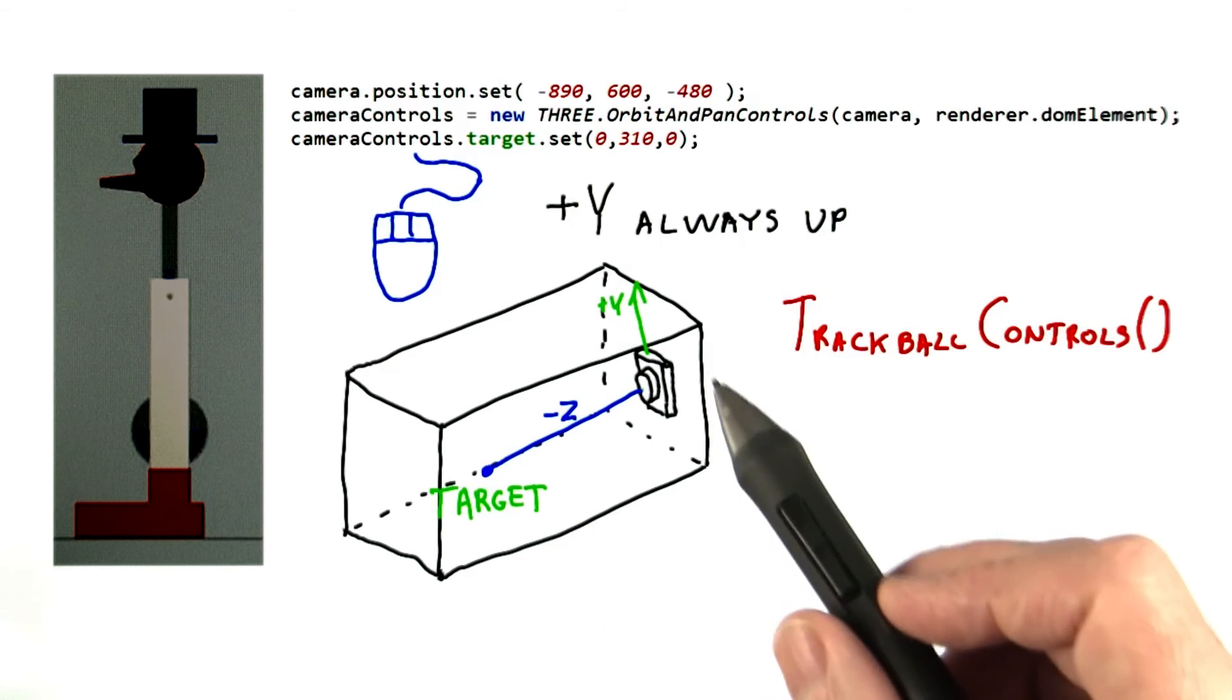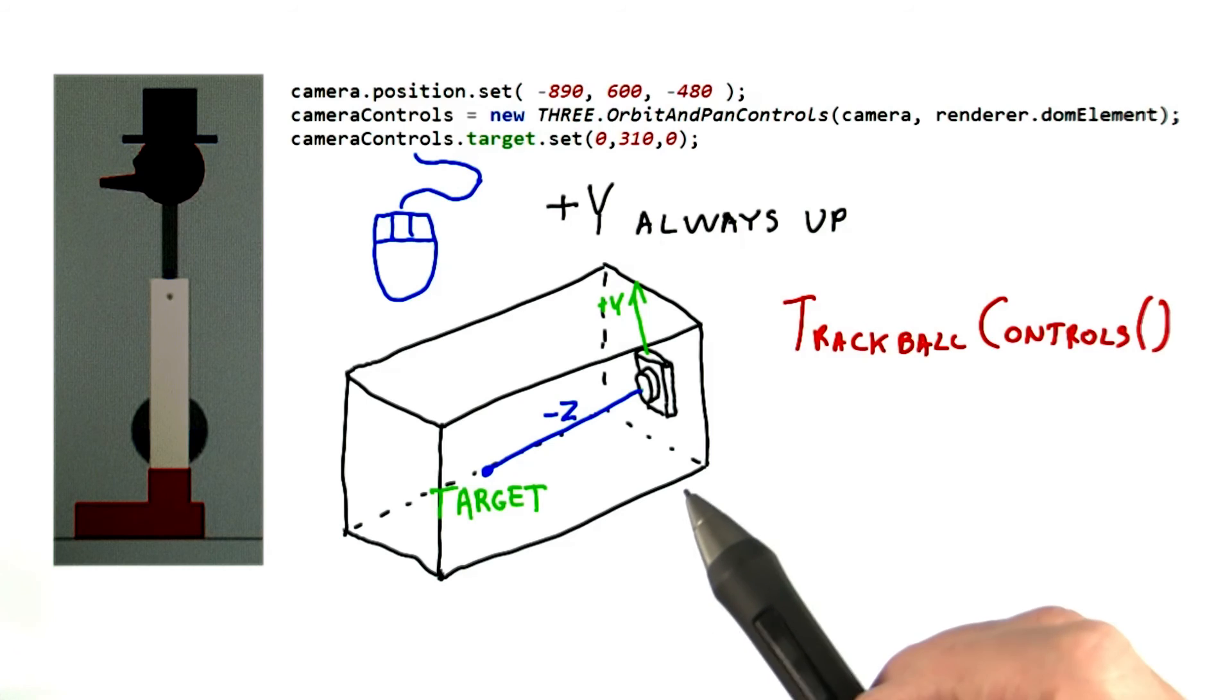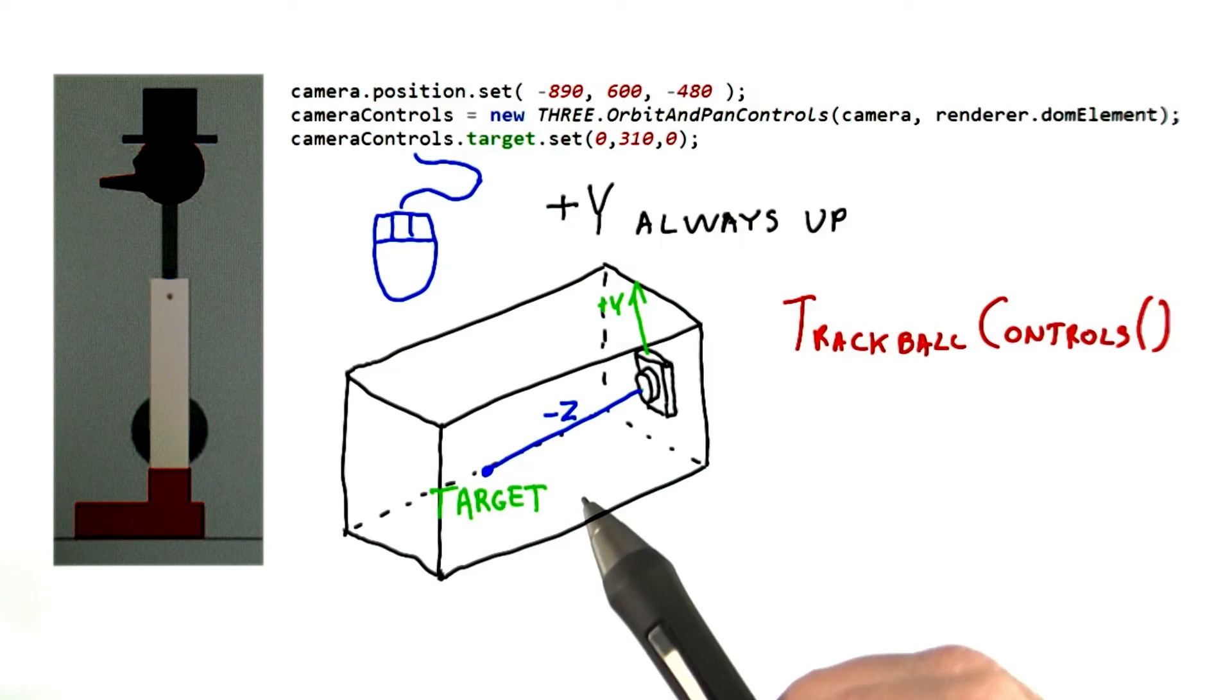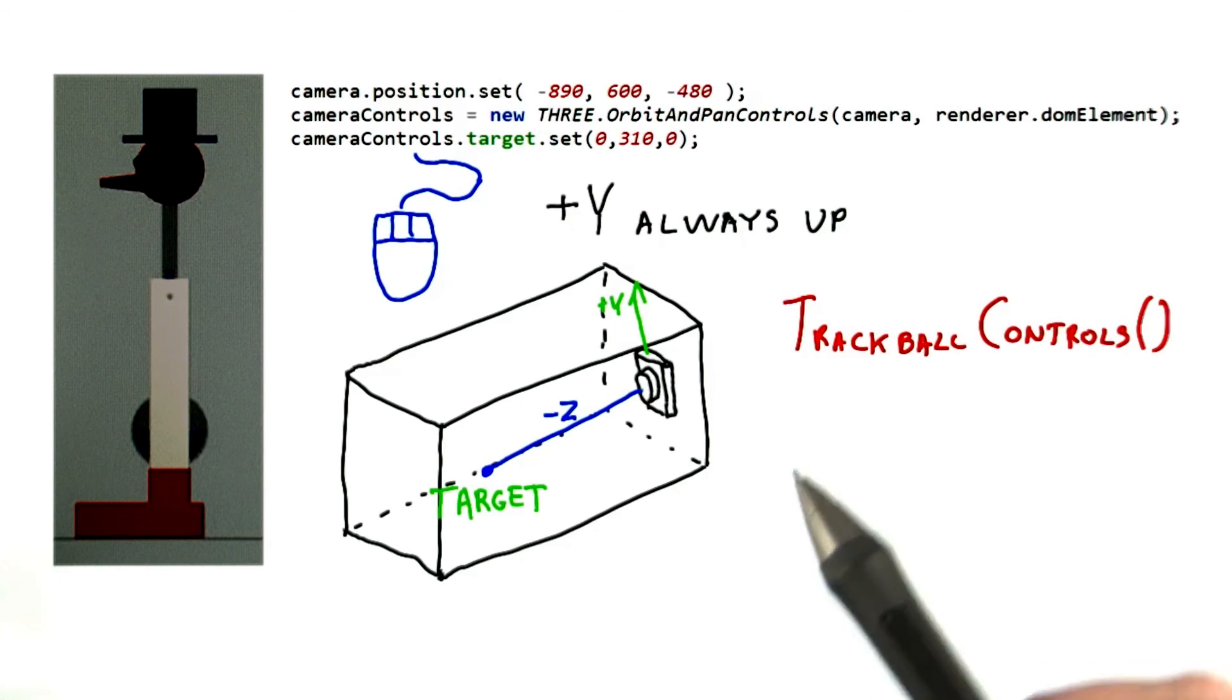Once we've positioned this box in space, it defines what part of the scene we want to render. Whatever happens to be inside this box is what we'll see on the screen. The z-buffer is applied as usual so that objects that are closer to the camera cover up what's behind them.